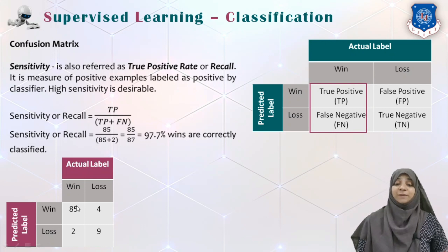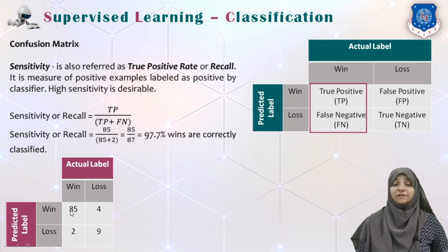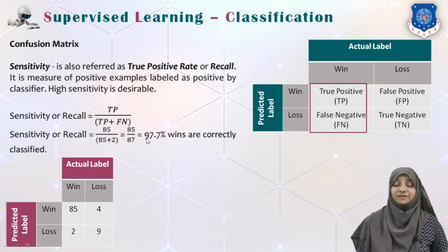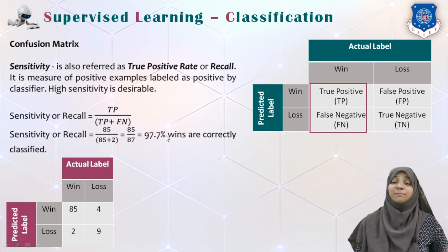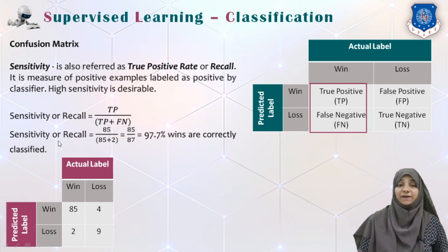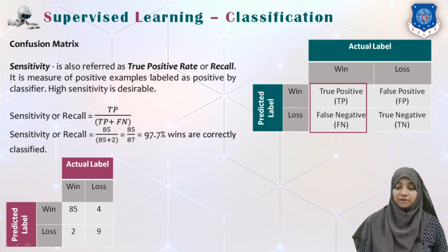Out of 87 actual wins, the system correctly predicted positive outcomes 85 times. So we take the ratio of 85 to 87, which equals 97.7%. This means 97.7% of wins are correctly classified. This is called sensitivity, or the true positive rate, or recall of a classifier.